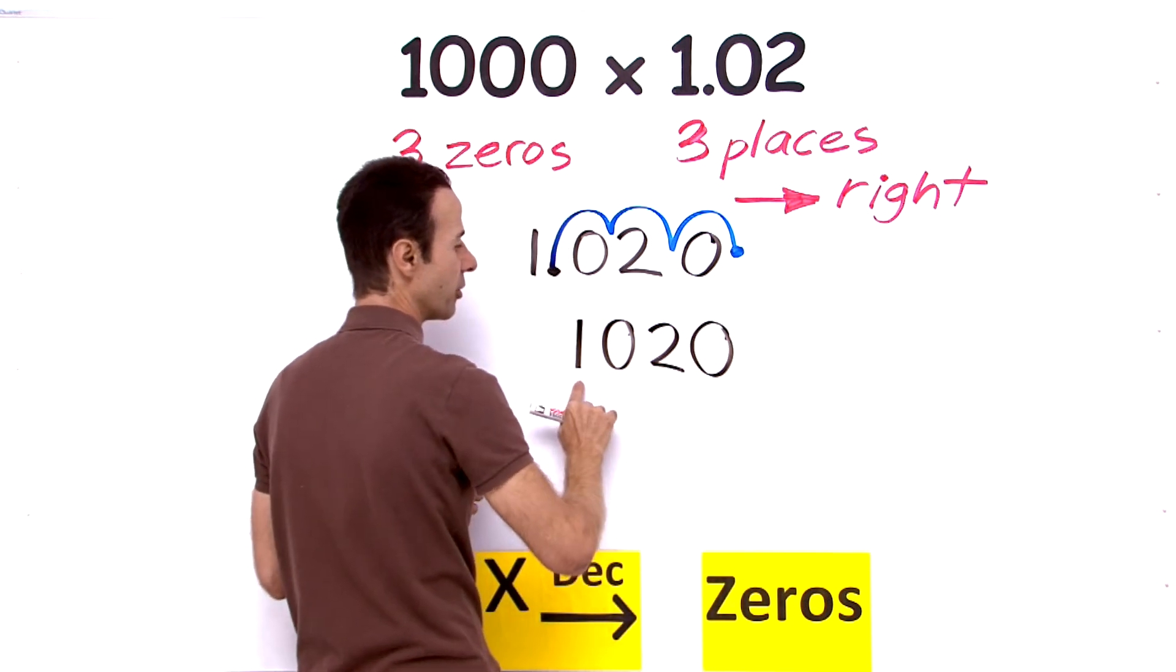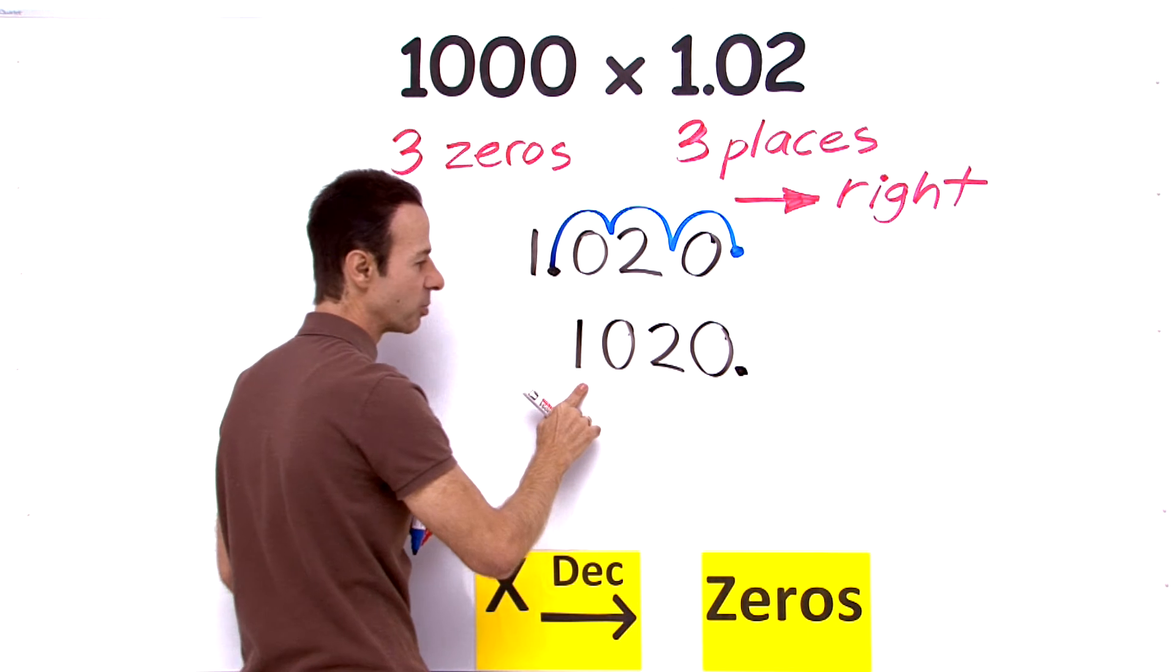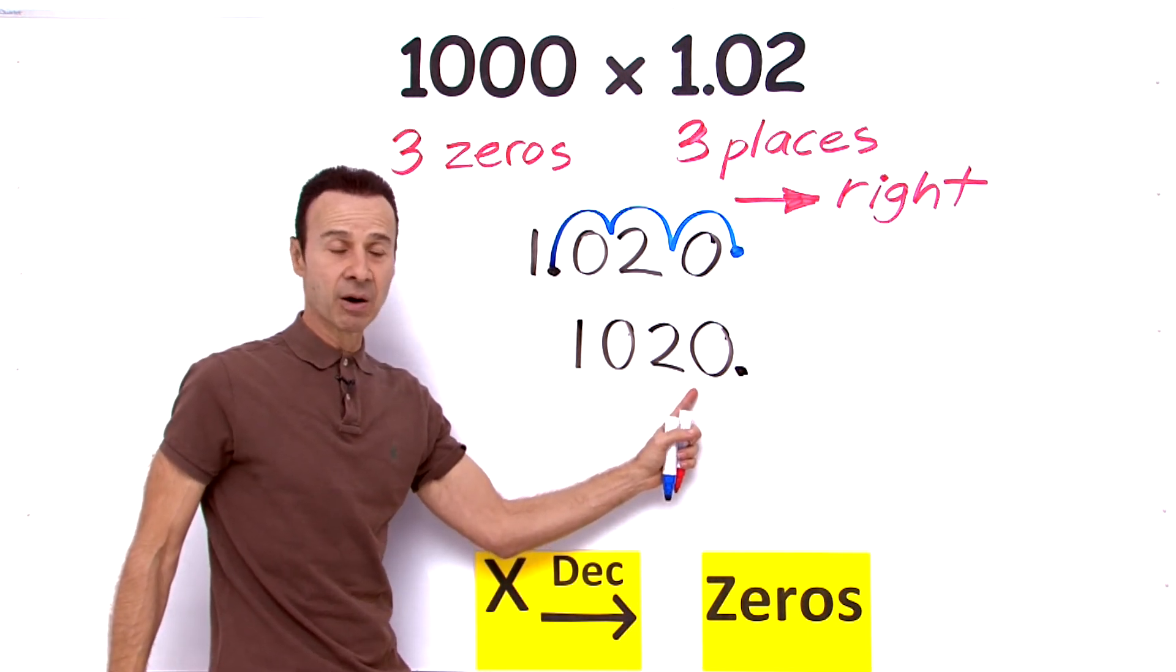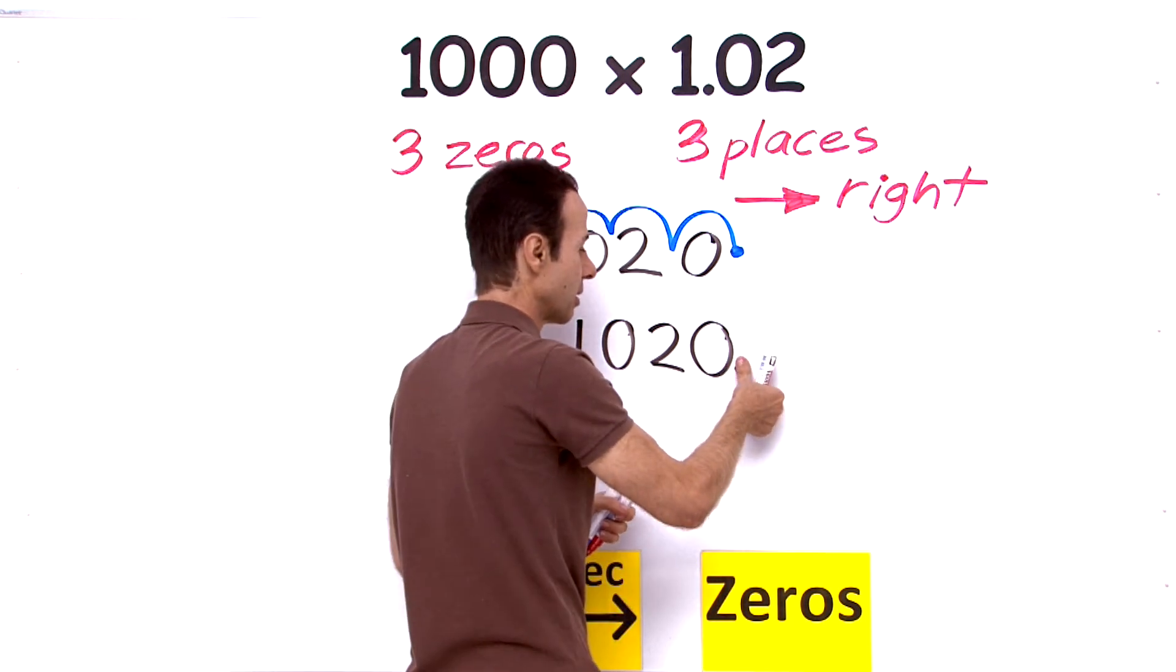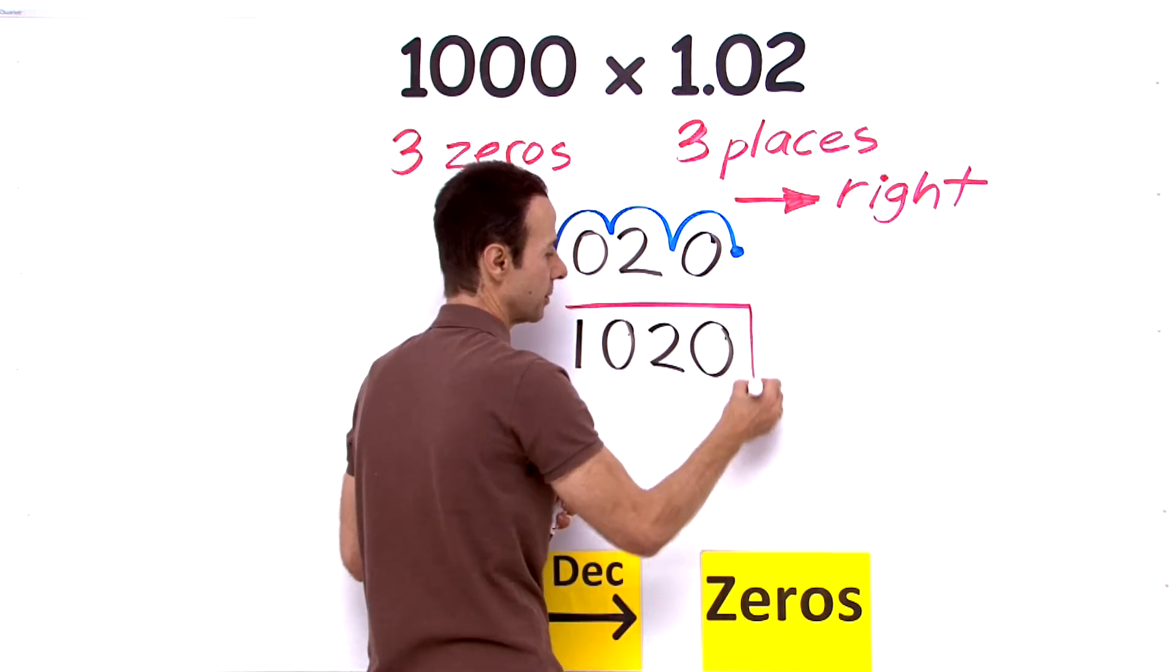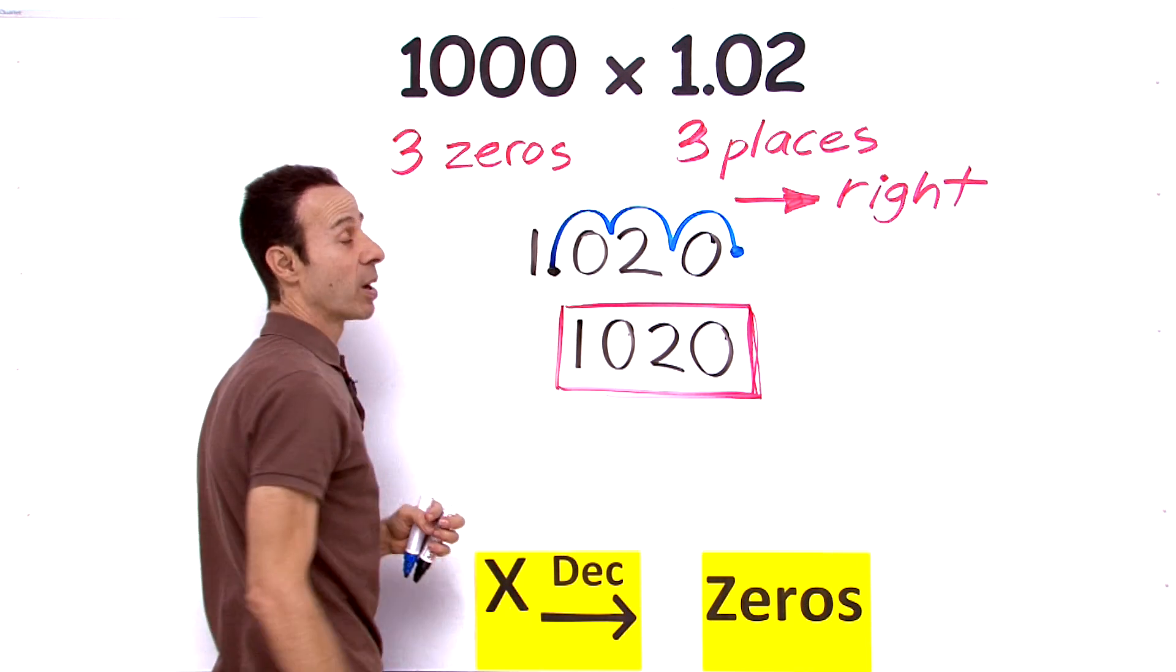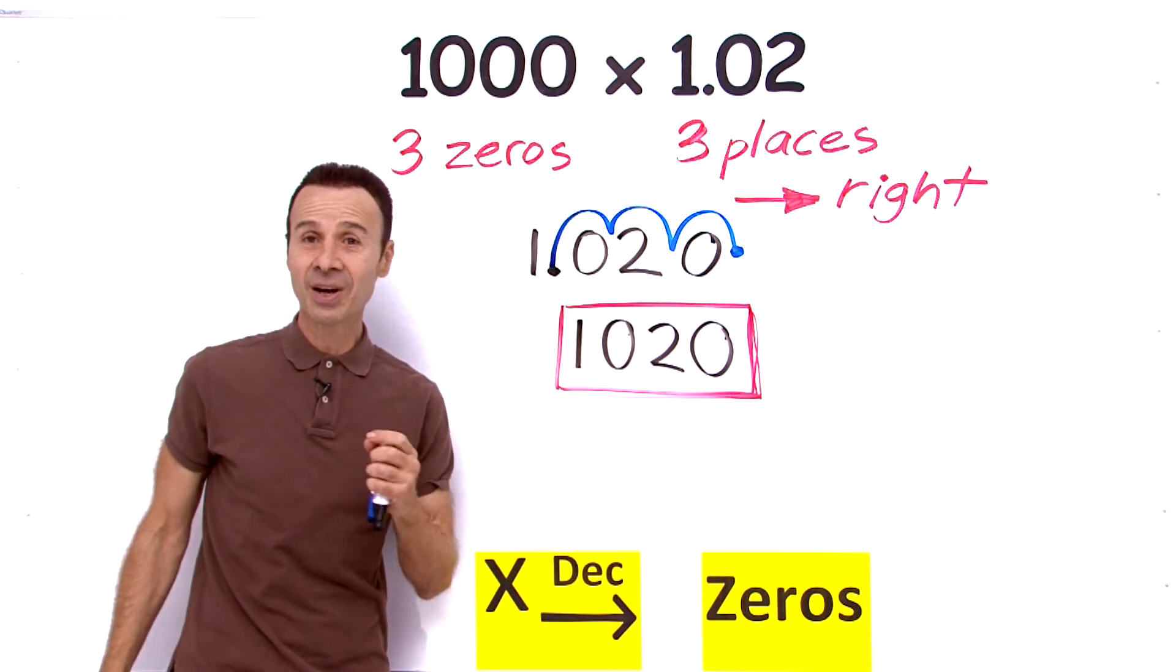And on the extreme right, the decimal place goes right there. There is no decimal place on the right, so the answer is 1020. Now, often when you see that decimal place there, it doesn't mean anything. I like to rub it out. It doesn't matter if you leave it; that's still correct. So again, 1000 times 1.02 is 1020. I hope that helps.